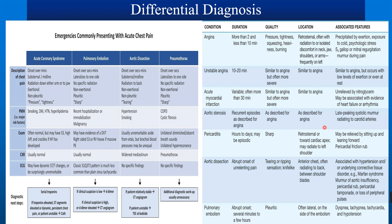Pericarditis pain is slowly progressive, lasting hours to days. It is a sharp, pleuritic chest pain relieved by sitting upright or leaning forward. On auscultation, a pericardial friction rub may be heard. Aortic dissection pain is very severe, abrupt onset, tearing or ripping type, knife-like, radiating to the back between the shoulder blades — a true emergency.